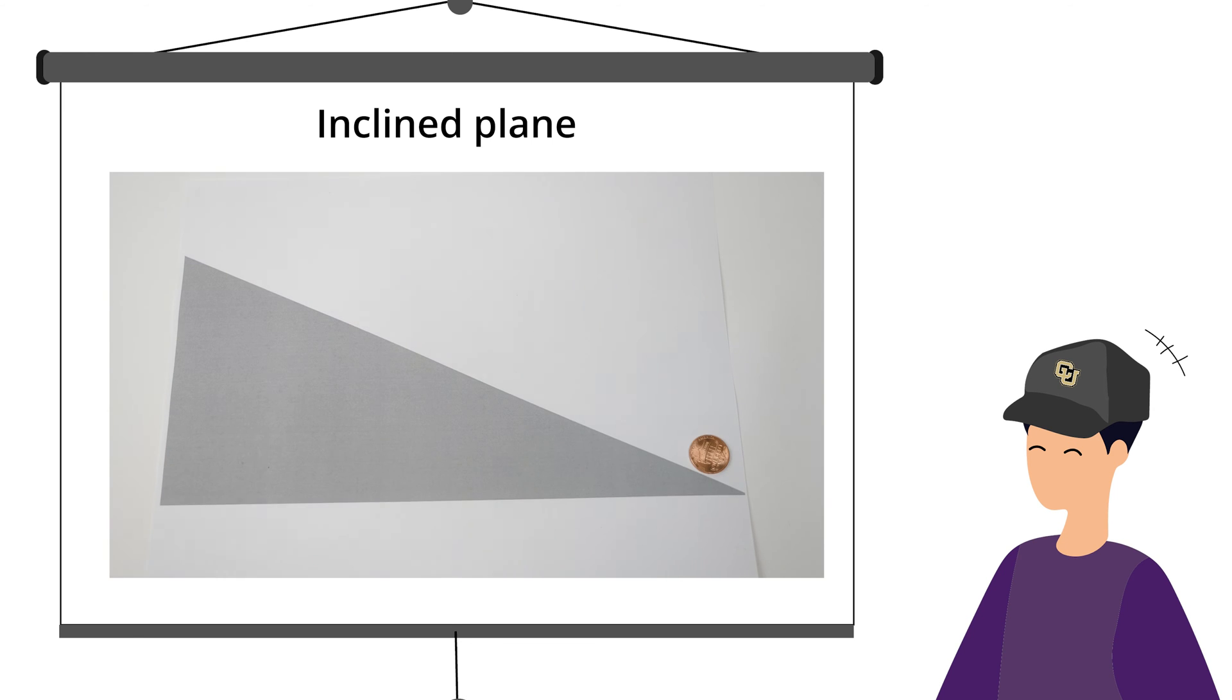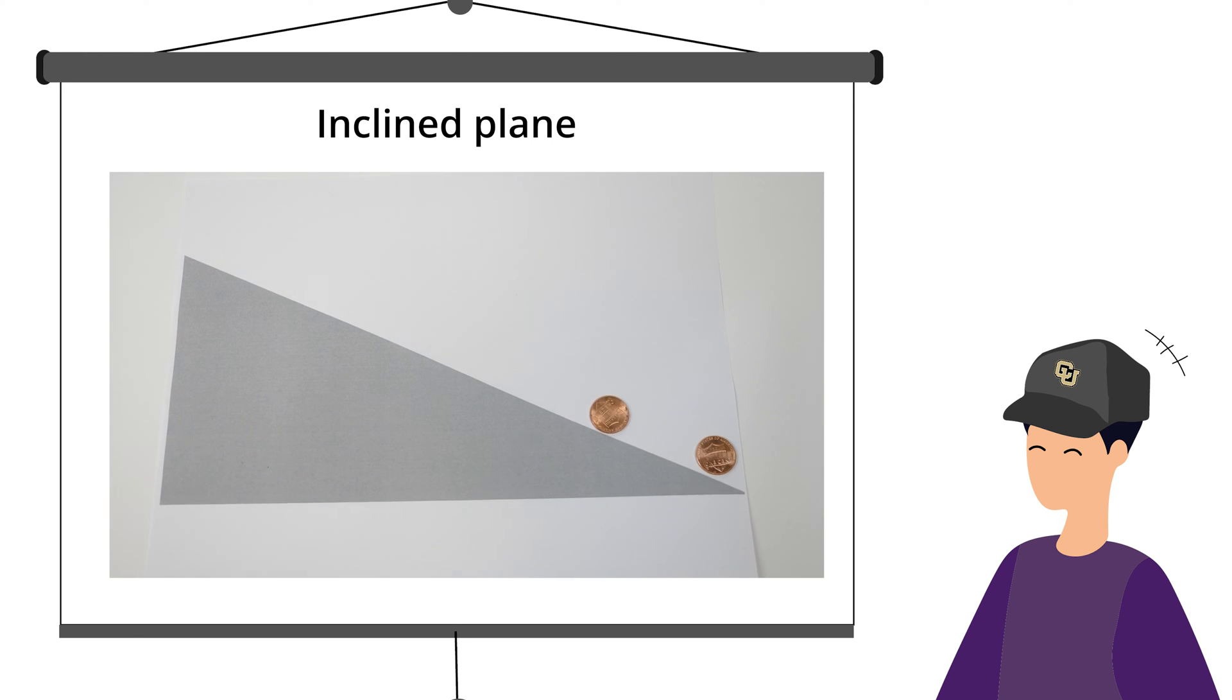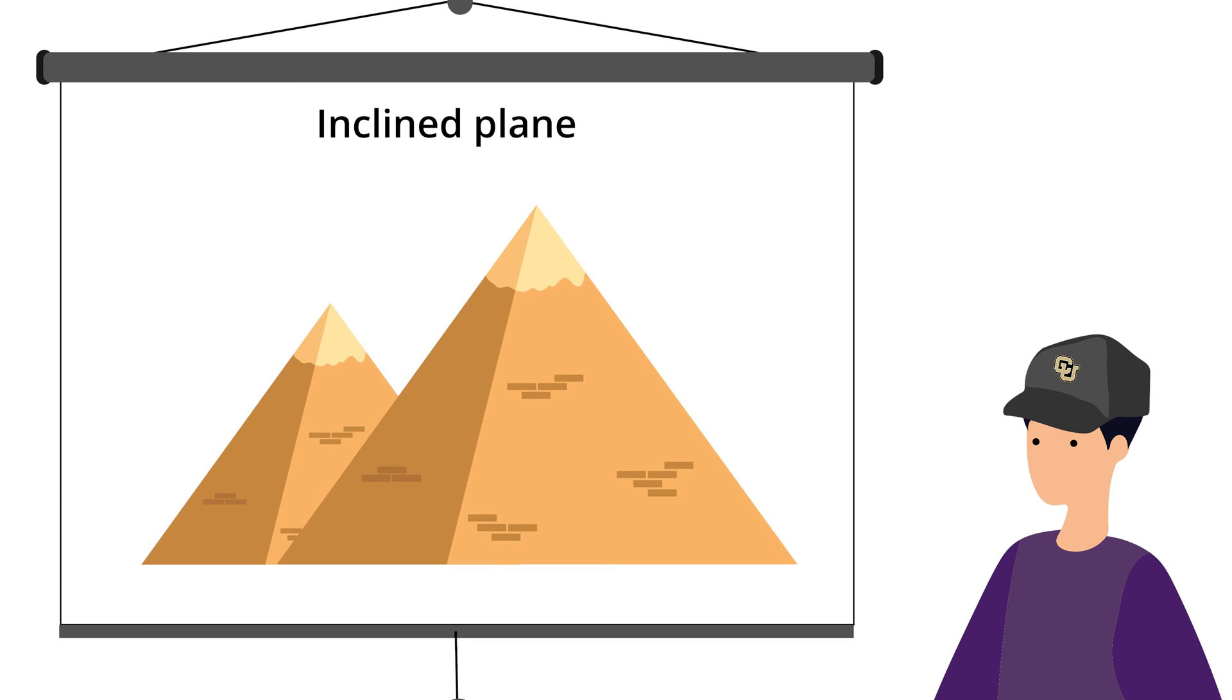Incline plane. An incline plane is a ramp that reduces the force needed to move an object. Consequently, the object must travel a longer distance. Incline planes were used by the Egyptians to build the pyramids.